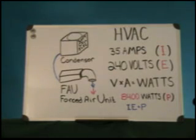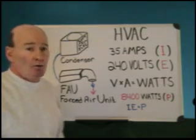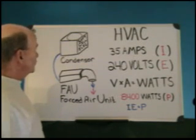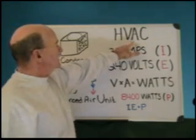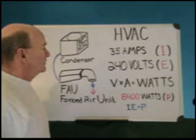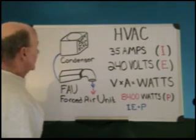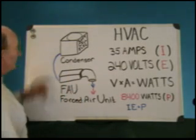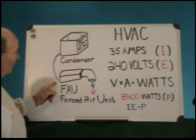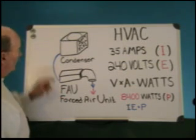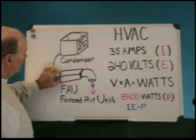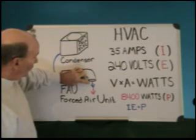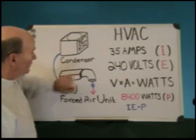Let's take a look at something that really uses a lot of power in your house — probably most of the power you use, which is your air conditioning unit. From here on out we're going to call it the HVAC, because that's what we call it in the trades. It actually consists of two units: the condenser unit and the forced air unit, the FAU. They're connected with Freon lines, and the FAU is what blows the cold or hot air through your house.